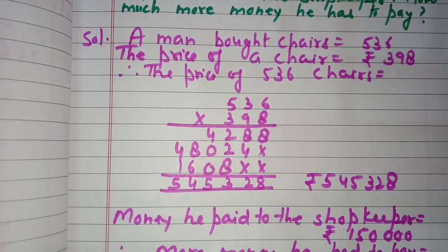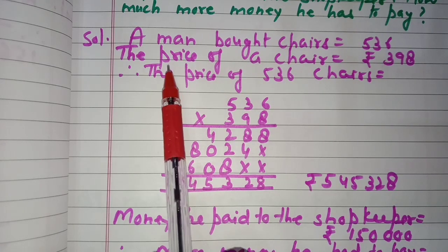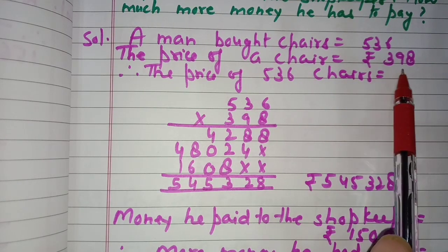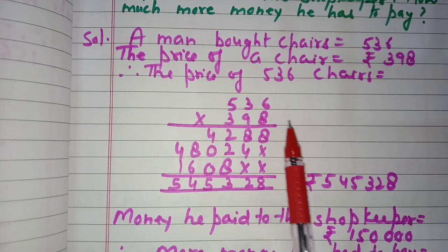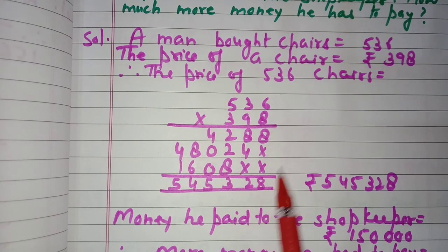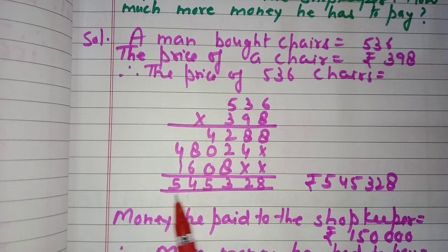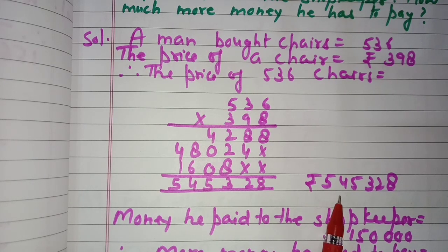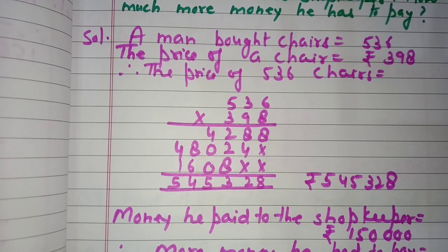A man bought 536 chairs at rupees 398 each. Therefore, price of 536 chairs — we multiply 536 by 398 and get 5,45,328. So the total price of 536 chairs is rupees 5,45,328.